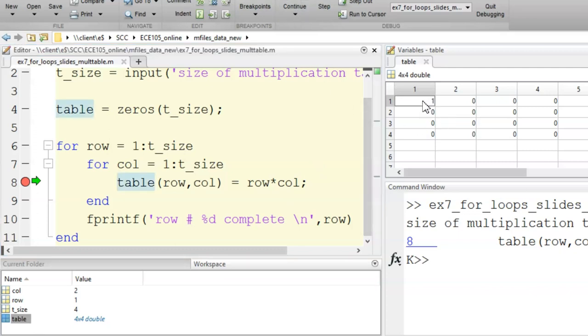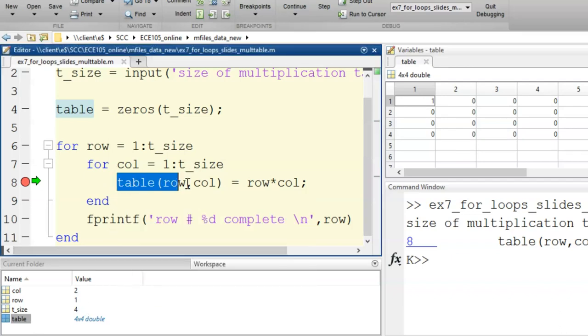Now, we are paused again. Row still equals 1 because we haven't left the inner loop. Col has been updated to 2, so this command performs 1 times 2 and assigns the result into index 1, 2. I click continue a couple more times and see the numbers fill in to the multiplication table one by one.